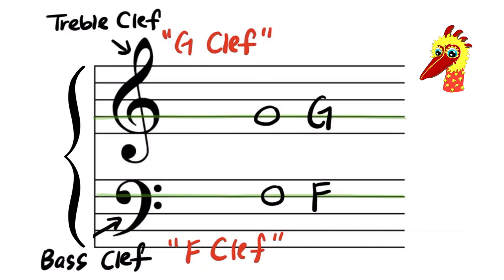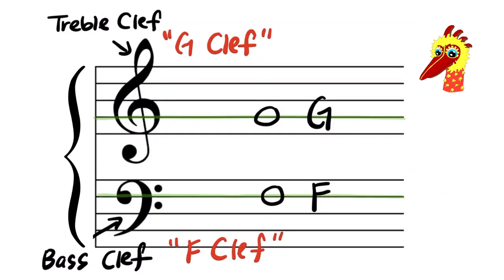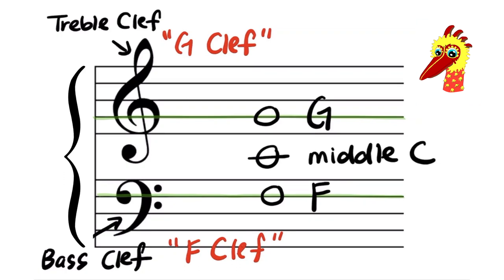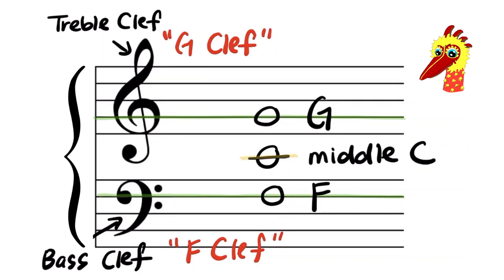There is another landmark note on the grand staff shared between line F and line G. Really? This landmark note is the middle C. Middle C would only be valid with the line drawn through the middle of the note. This line is called the ledger line.